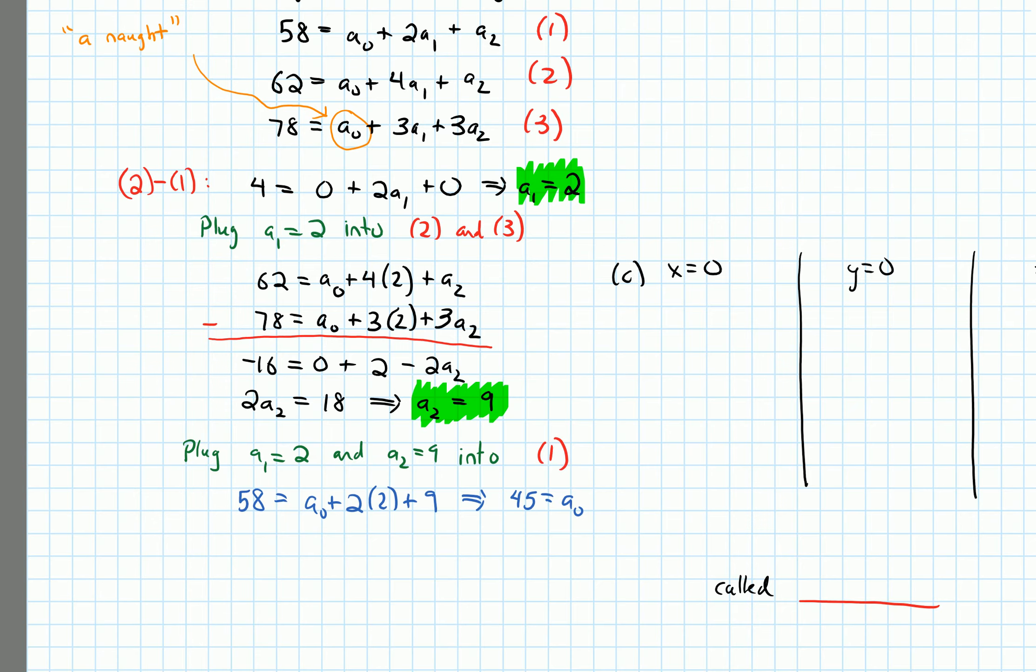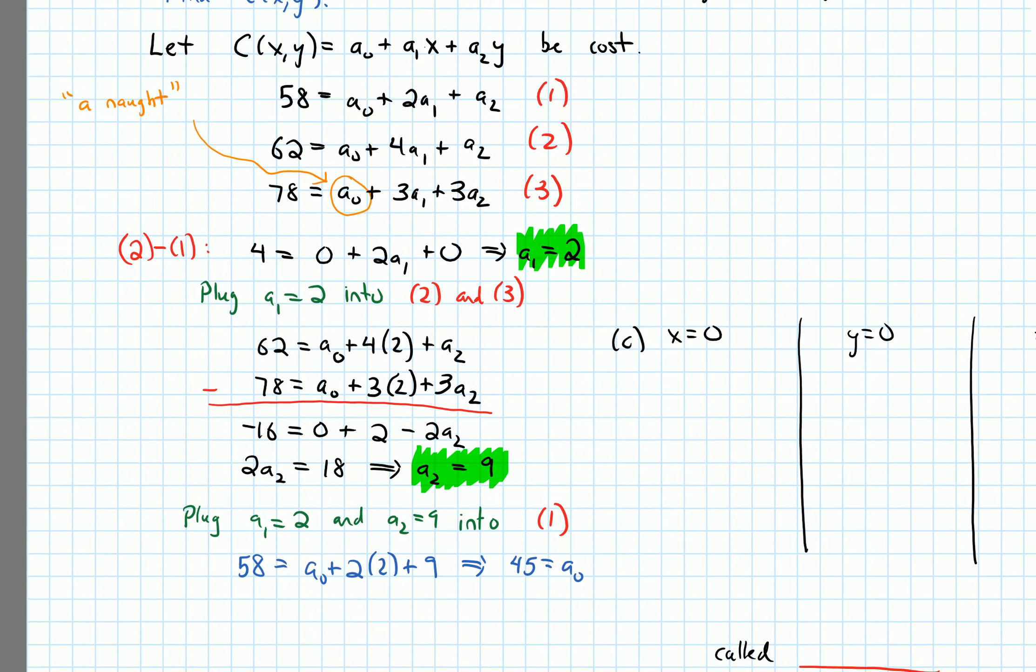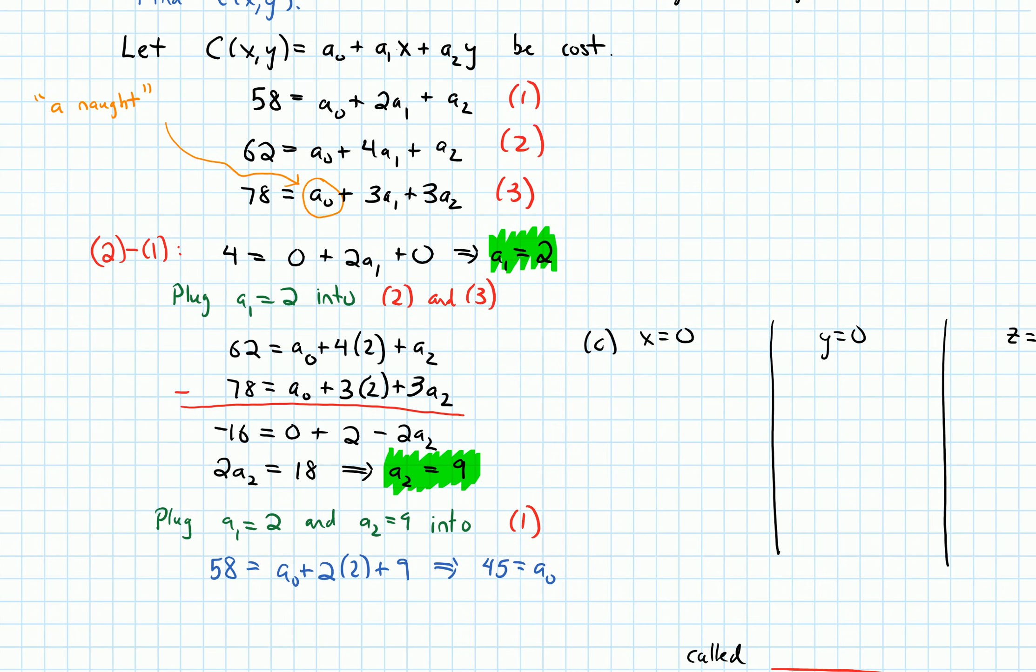All right. So now I know my three coefficients. So I know the last one is 45. So I'm ready to write down my cost function. So C of x comma y equals... What was a₀? It was 45. Plus a₁ was 2. So 2x. Plus a₂ was 9. So plus 9y. And that's my cost function.